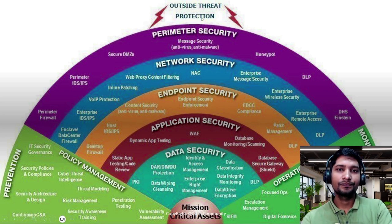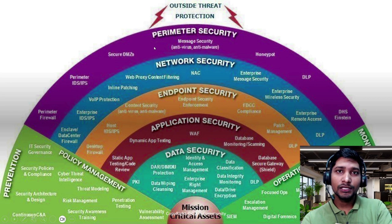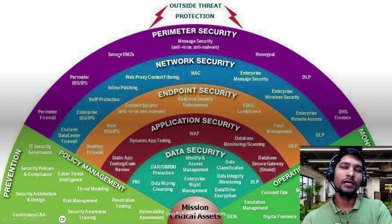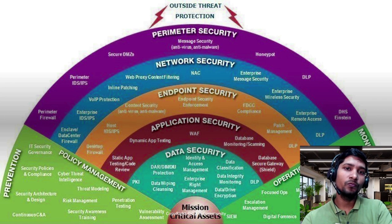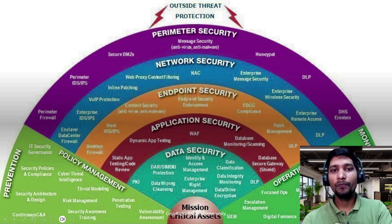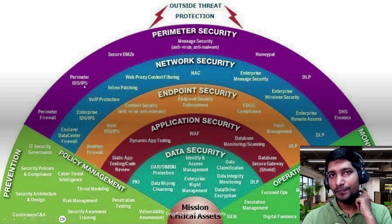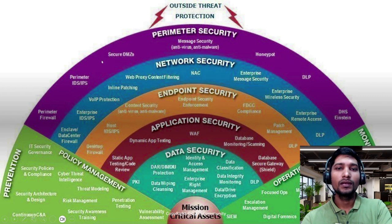Coming from the outside, this is for outside threat protection. For perimeter security, we use honeypots, DLP, and a secured DMZ — demilitarized zone — which is generally used to communicate from private to public networks. Perimeter IDS/IPS and a firewall can be set up at the external level.